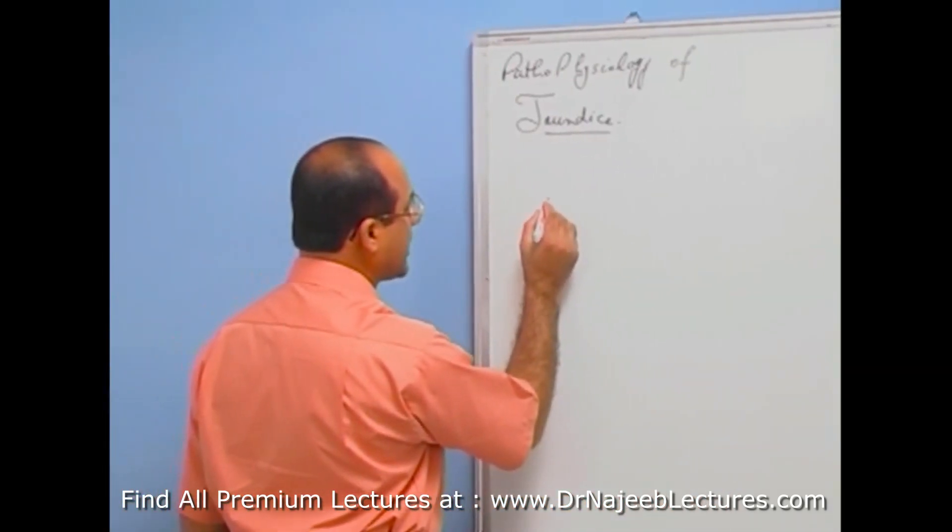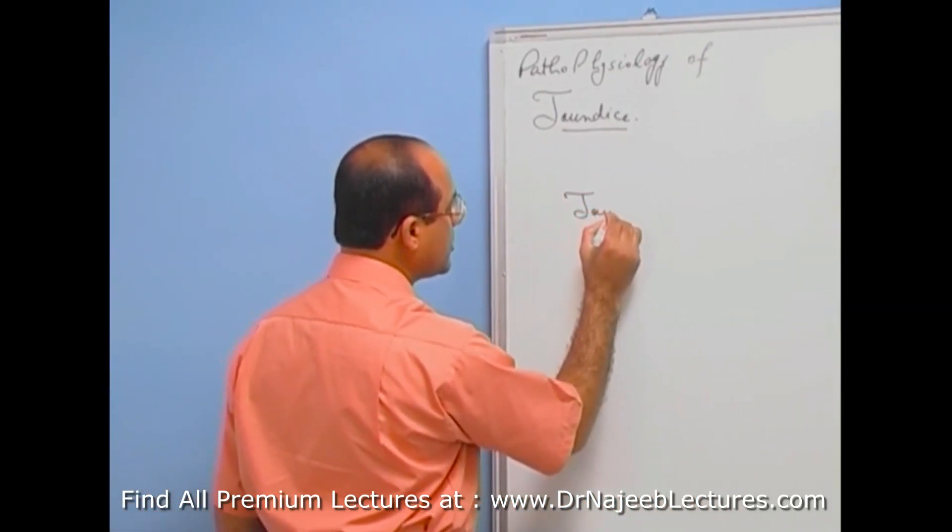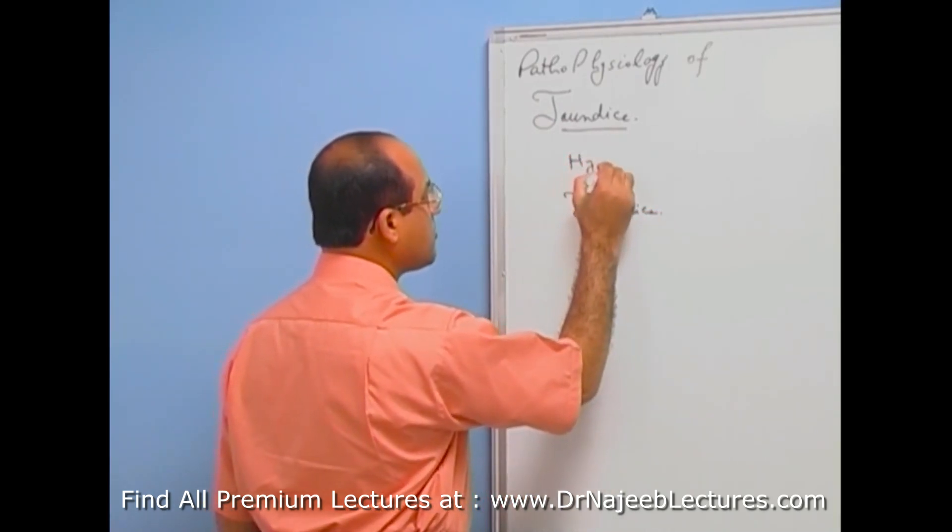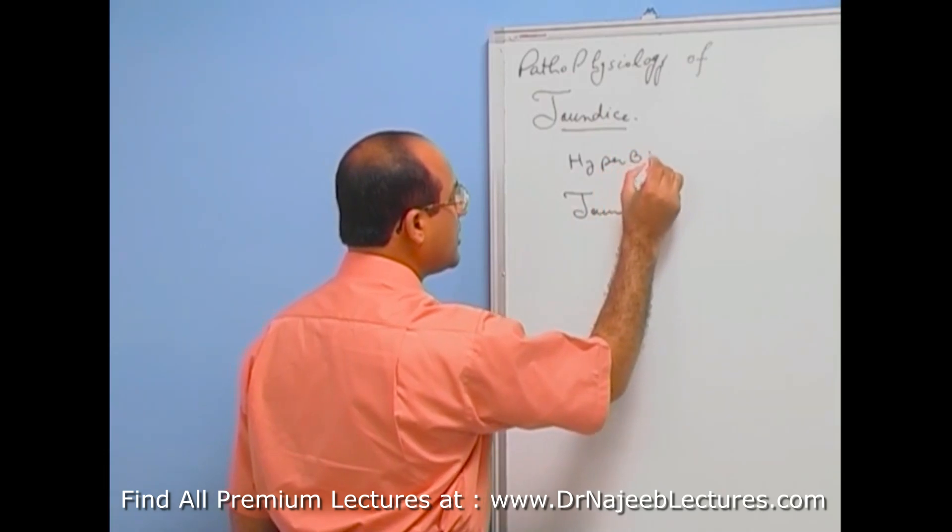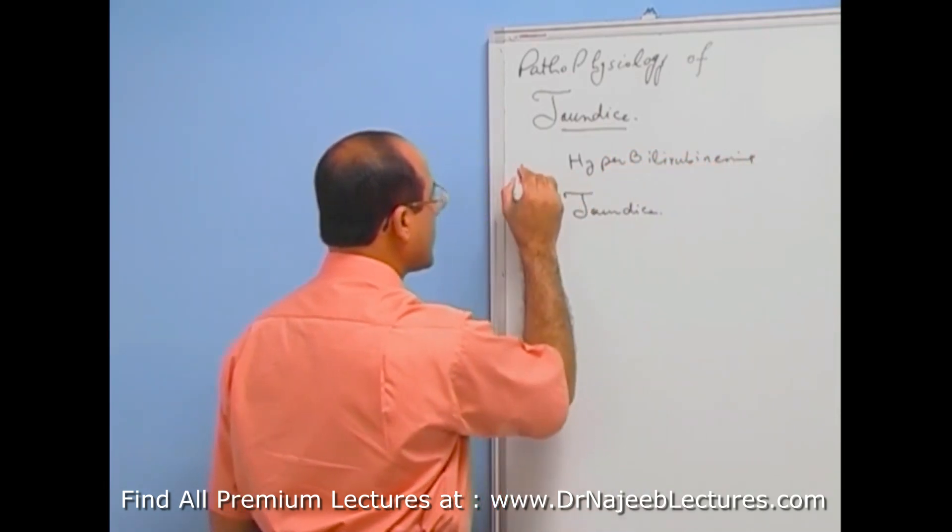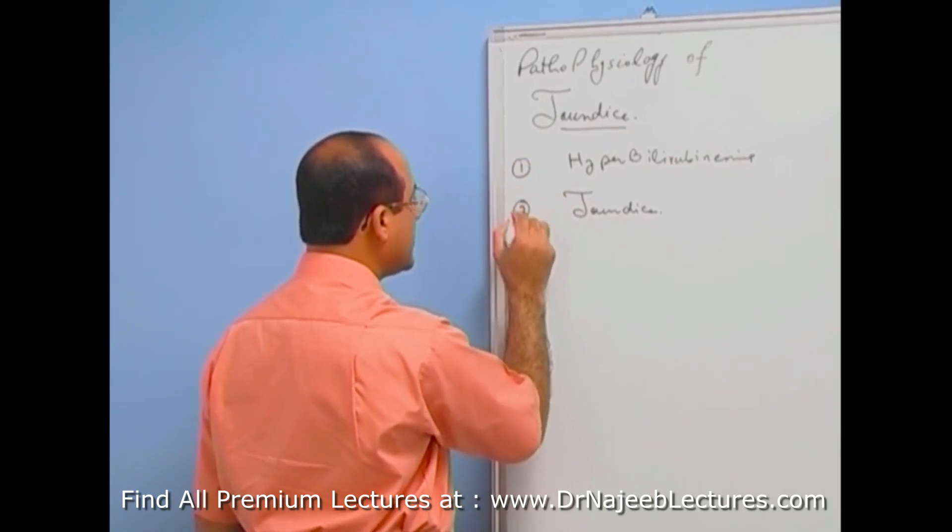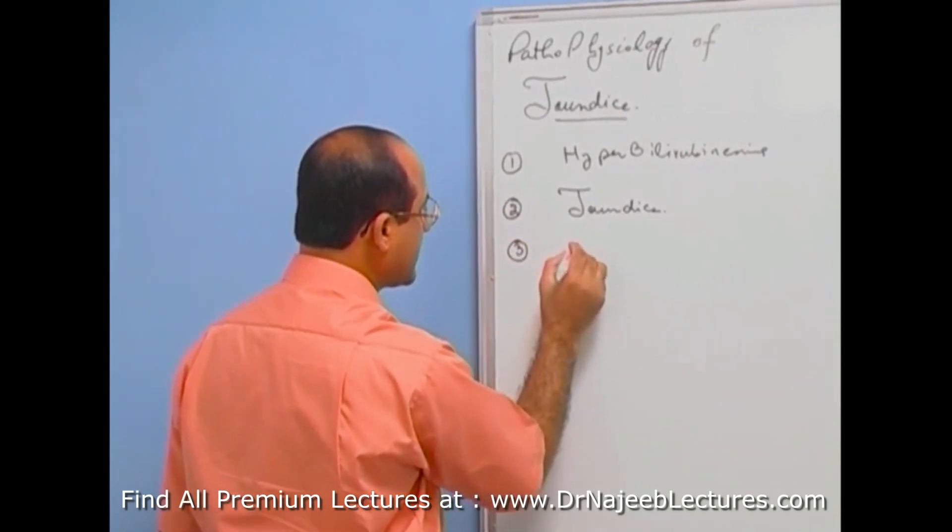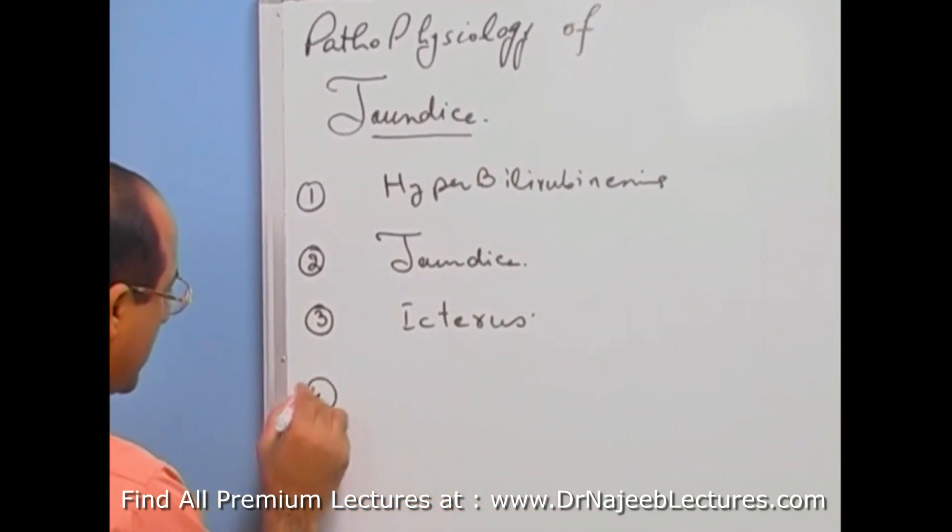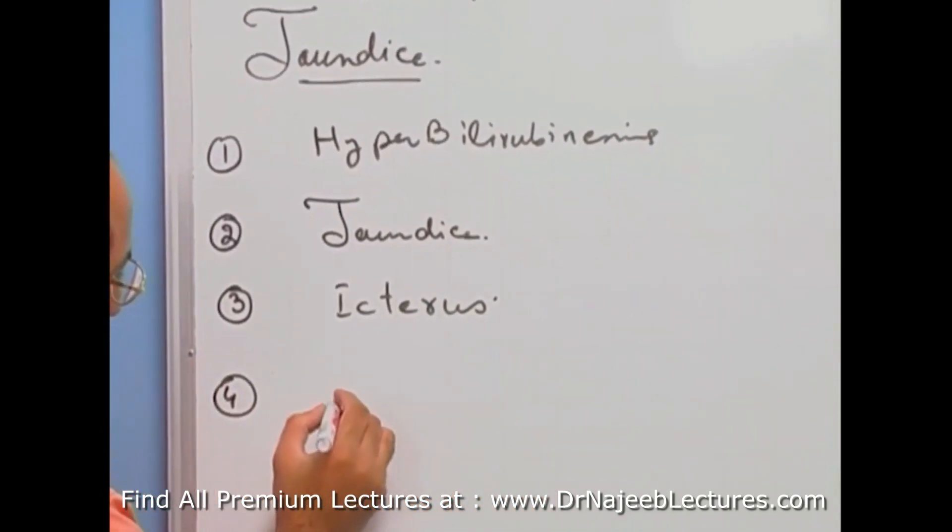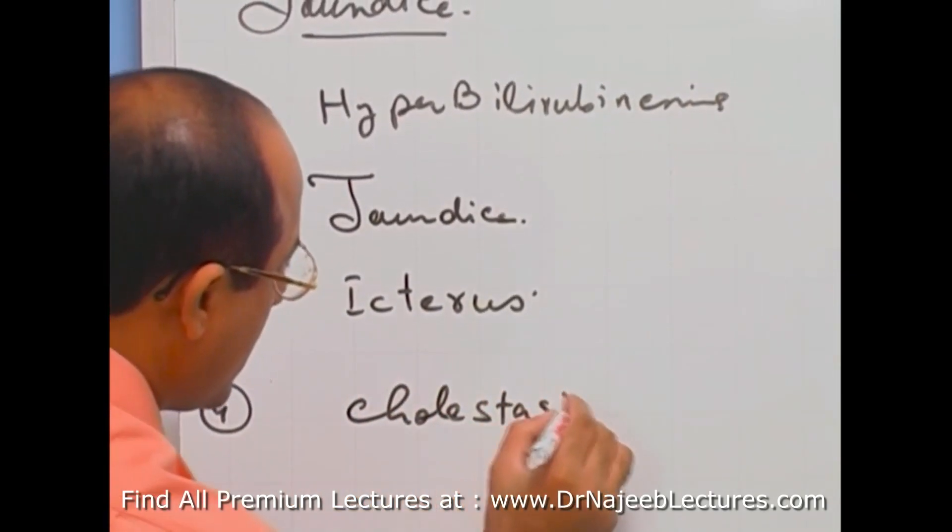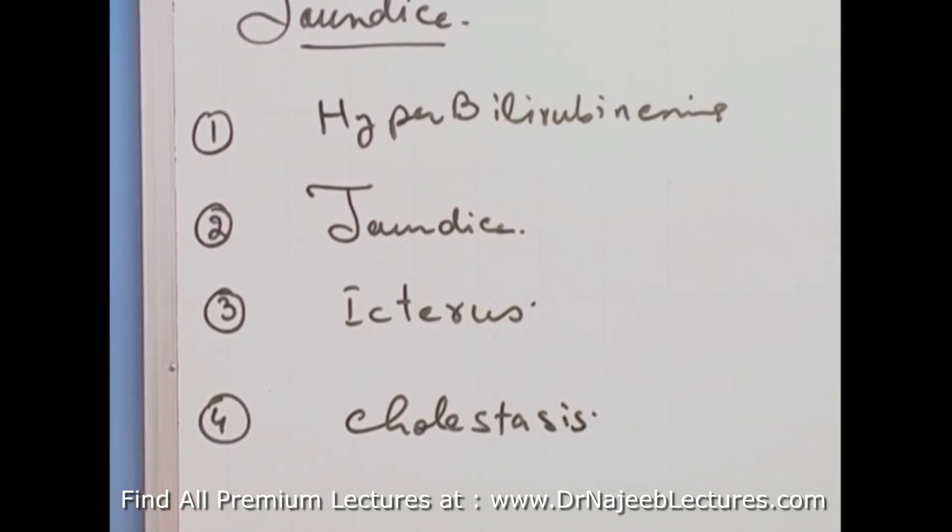There are three terms which you should be clear. Number one, jaundice. Another term is hyperbilirubinemia. Then there is another term is icterus. Then another term is cholestasis. These are terms which should be differentiated from each other.